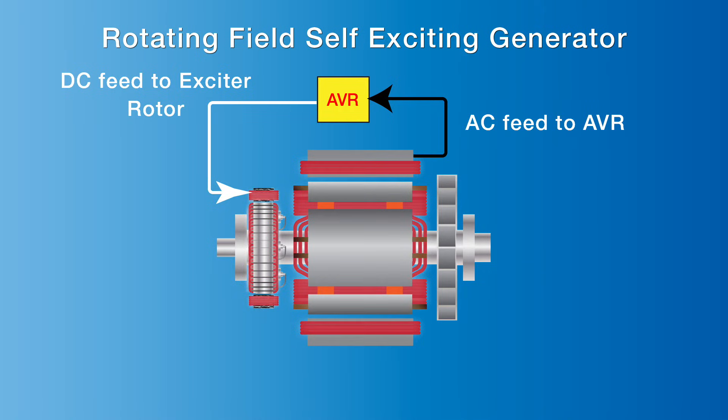If the AVR's reference voltage falls, it increases DC current to the exciter coils and reduces this current if the reference AC voltage is too high.